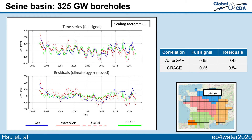La Garonne basin has the best performance in terms of correlation among all six basins. La Seine basin has the lowest correlation among all six basins. We can see that the scaling factor is 2.5, and even with the lowest seasonal signal it still has a correlation of 0.65.